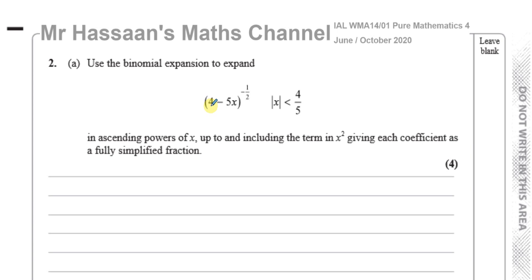When we expand something with a power that is not a positive integer — this power is neither positive nor an integer — we cannot use the NCR method. The NCR method uses a calculator button to compute coefficients and works only for positive integer powers, as used in P2. In P4 we deal with negative and non-integer powers, so we need a different method whose formula is found in the P2 formula booklet.